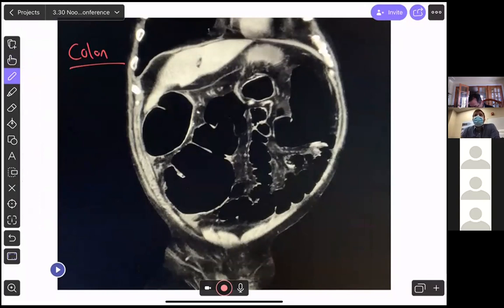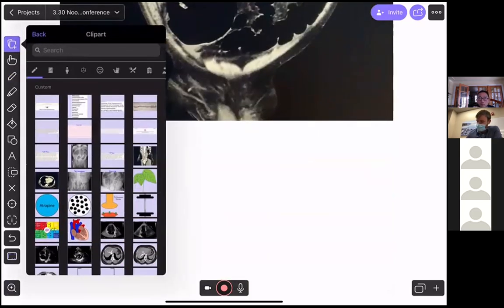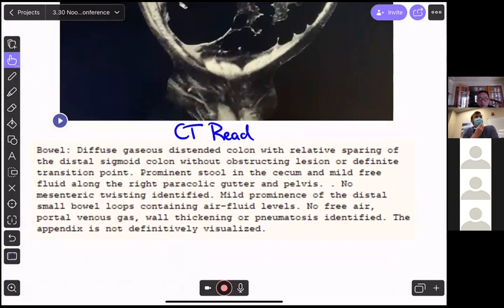Adam, any additional thoughts on this? Yeah. So I didn't give Adam the full tool to like actually scroll through this. But the interesting thing is they give the CT scan and we have an official read here because I wasn't going to just put this all on Adam. And here's the official read. They say that this person has diffuse gaseous distended colon relative sparing of the distal sigmoid without an obstructing lesion or definite transition point. And they say he has prominent stool in the cecum as well. But no pneumatosis was identified or anything else. So the big takeaway here is that this person has no obstructing lesion or definite transition point.